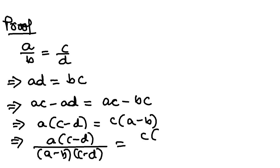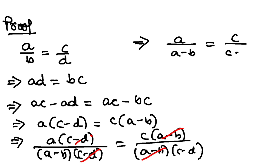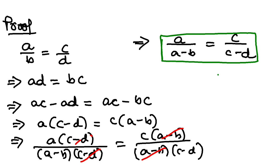Dividing both sides by (a - b)(c - d), the (c - d) cancels on the left and (a - b) cancels on the right. What is left is a/(a - b) = c/(c - d). This is the expression for convertendo.